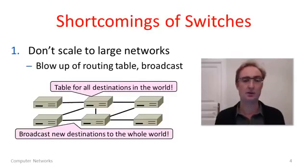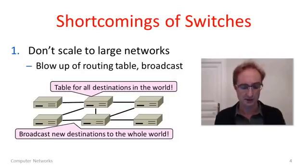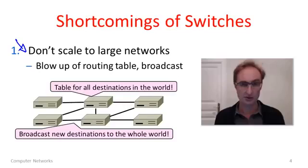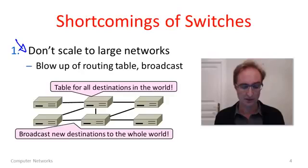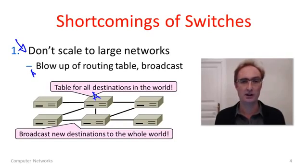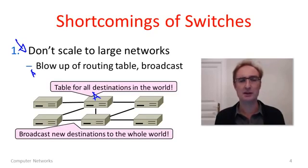There were actually three shortcomings of the switch approach I remarked on briefly at the end of that unit. The first shortcoming was that the method we looked at didn't really scale up to large networks. As your network gets larger, it goes from tens to hundreds to thousands up to millions of different hosts. One issue is a blowup of the routing table — every switch in this diagram is keeping a table which maps for every different destination which way to go. That table is going to have millions of entries as the network gets bigger.